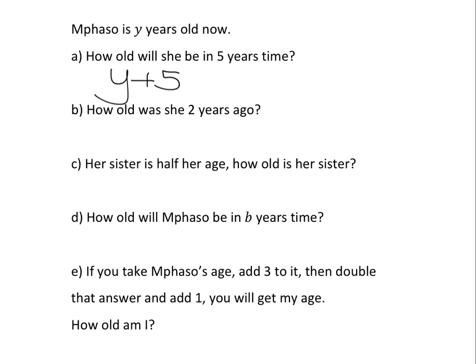You try now. How old was she two years ago? Pause, write the answer down, and then let's check it. Right. Hopefully that was easy. You know whatever age she is to get to how old she was two years ago. You simply subtract two.